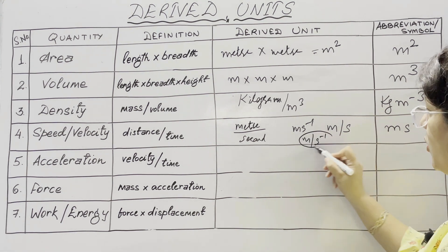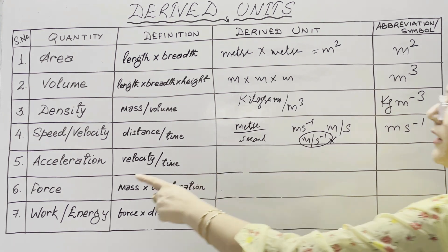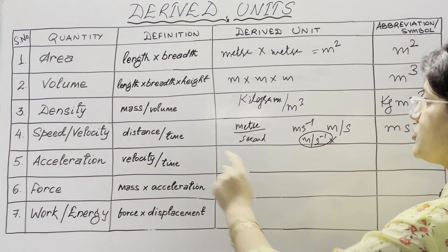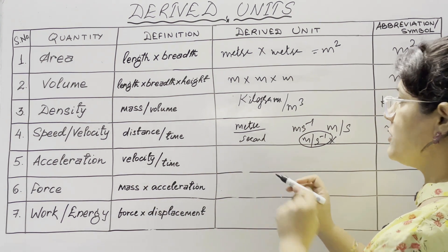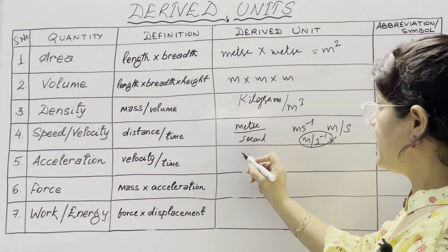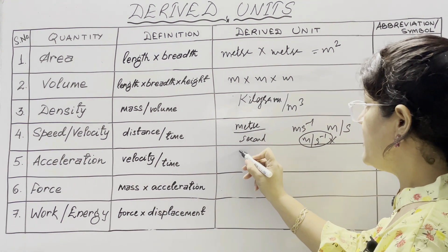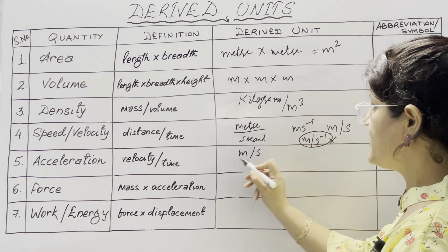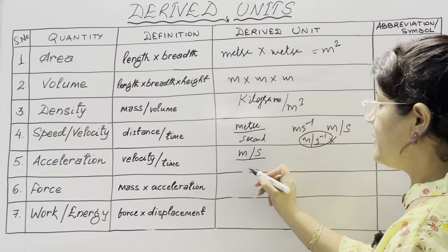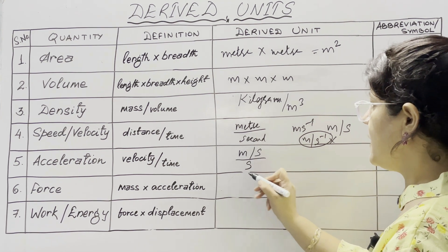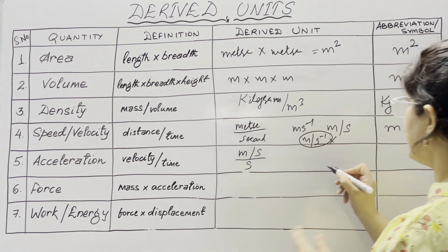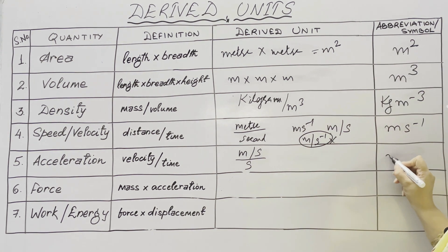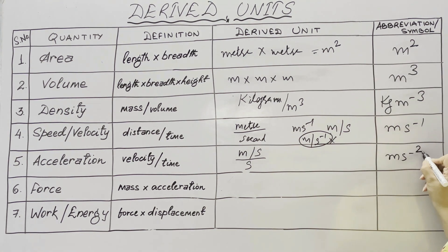Acceleration is velocity per unit time. The SI unit of velocity is meter per second and time is second, so the SI unit of acceleration is meter per second square, written as m s⁻².